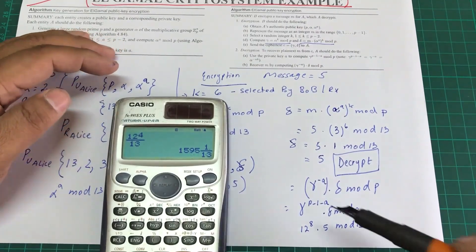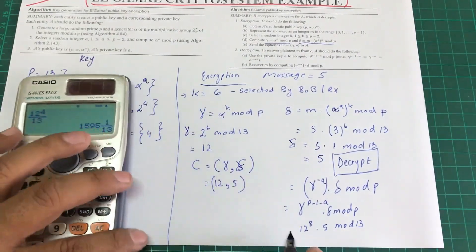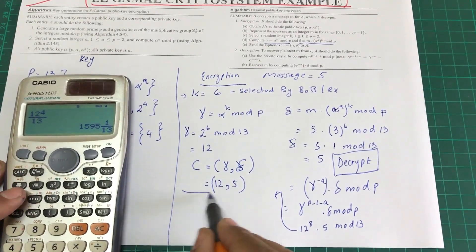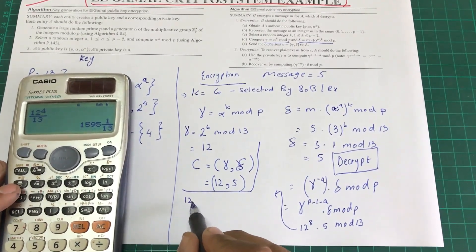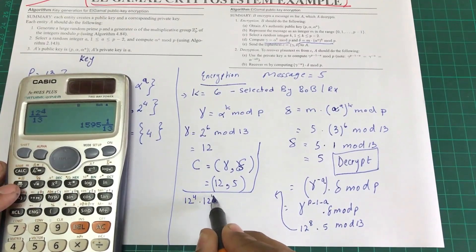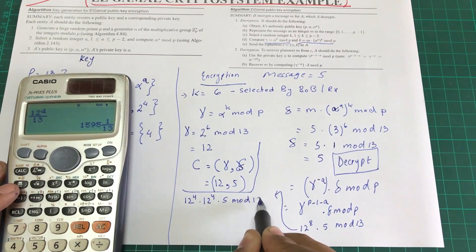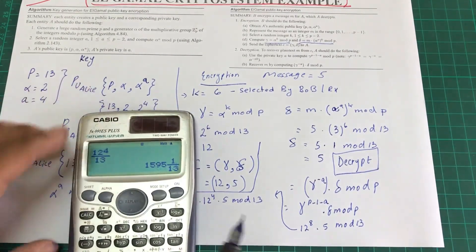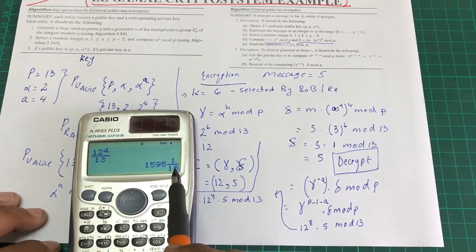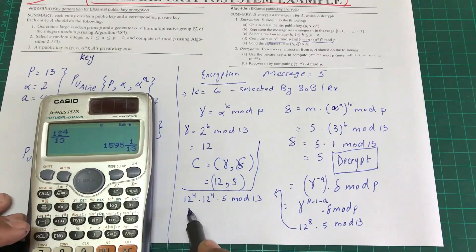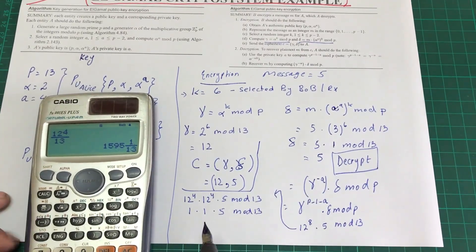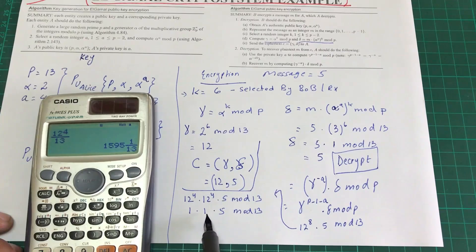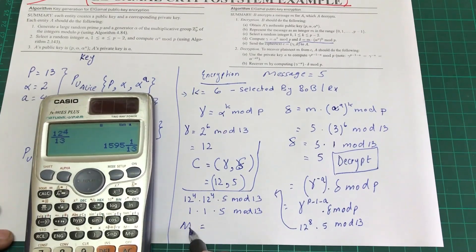Computing 12^4 mod 13 = 1. Since the bases are the same, 12^8 mod 13 = (12^4 mod 13) × (12^4 mod 13) = 1 × 1 = 1. So the decryption gives us 1 × 5 mod 13 = 5 mod 13 = 5. This recovers the original message m = 5.